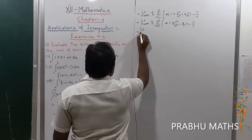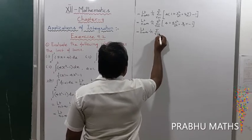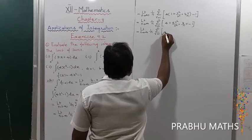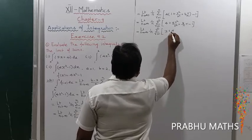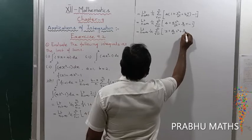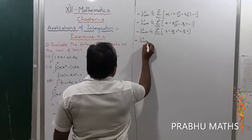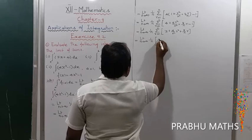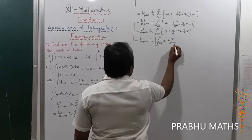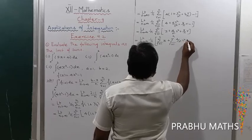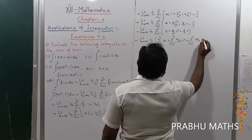That is equal to: limit n tends to infinity of (1/n) times the summation from r equals 1 to n, where 4 minus 1 equals 3. So we have: 3 plus 4/n² times r² plus 8/n times r. Separating the summations: (1/n) times [summation of 3 + summation of (4/n²)r² + summation of (8/n)r].